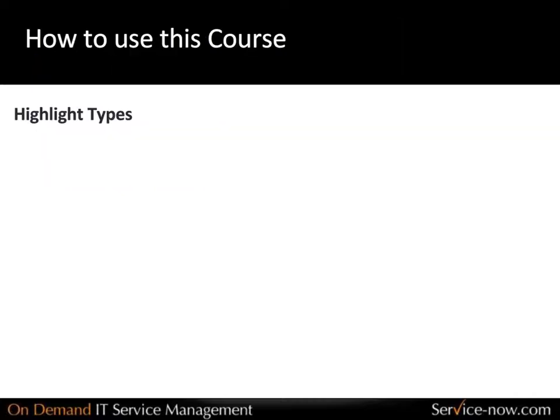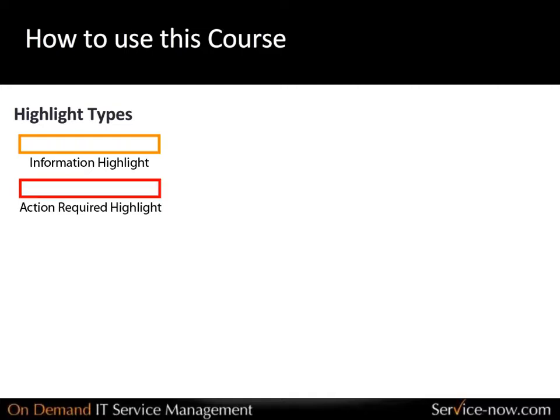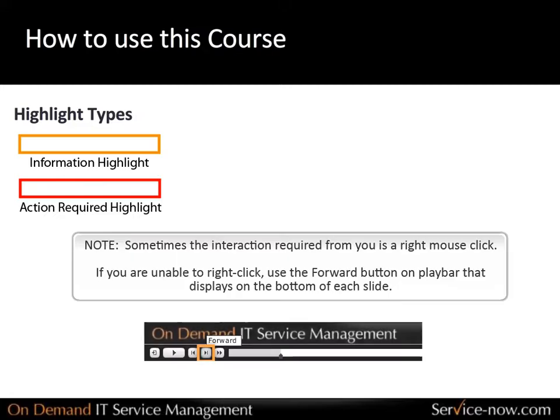There are two kinds of highlights used throughout the training. An orange highlight draws your attention to a certain part of the screen. A red highlight pauses the training and requires an interaction from you, such as a left mouse click.